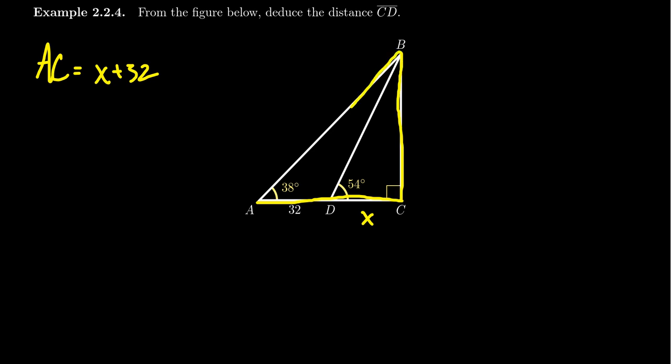Looking at the ABC triangle, we have X plus 32 and 38 degrees for angle A. We also know that X is the adjacent side of the right triangle BCD with respect to angle D. So we could try to use some type of right triangle trigonometry to relate those things together.